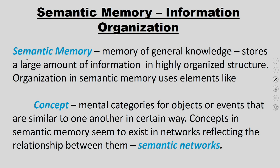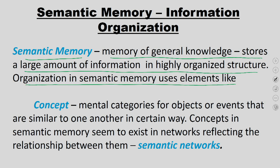Semantic memory is memory for general knowledge that stores a large amount of information in highly organized structures. Information in semantic memory is stored in terms of a network composed of nodes and subnodes. For example, the concept 'animal' is a top node; within it you have birds, reptiles, and mammals; within birds you have different kinds of birds; within reptiles different kinds of reptiles, and so on.